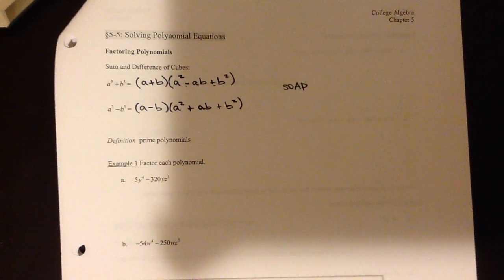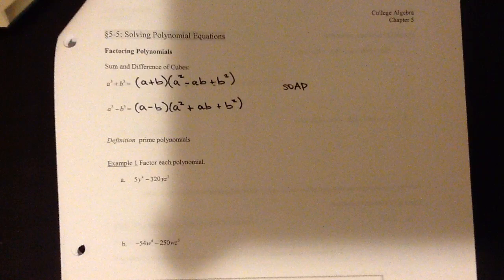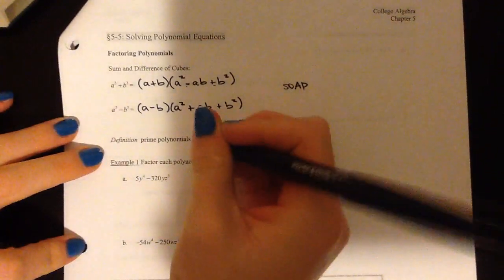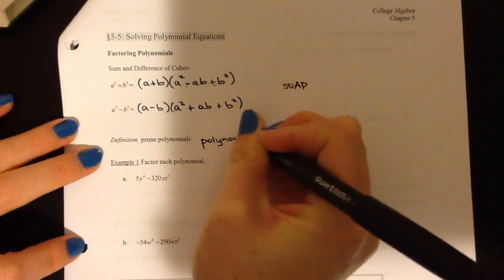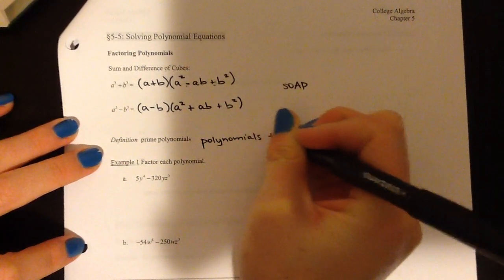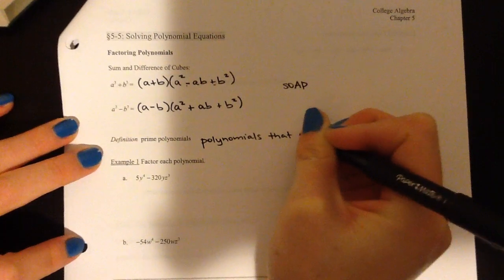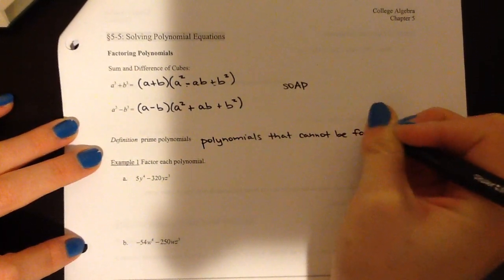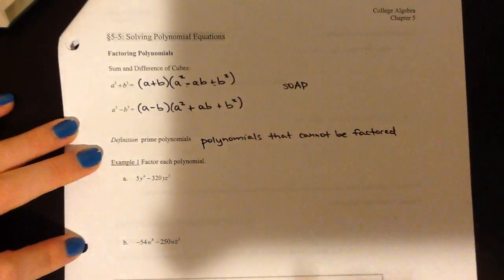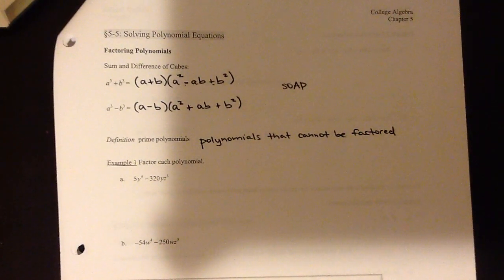Quick definition: since we're talking about factoring, we have to keep in mind that it's possible we could have some prime polynomials. Prime polynomials, just like prime numbers, are polynomials that cannot be factored. That doesn't mean that you just get to decide things are prime because you don't feel like factoring them — make sure you're keeping an eye out for any sort of patterns.